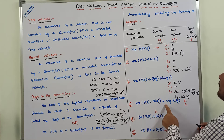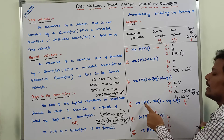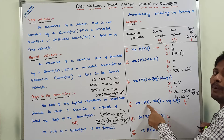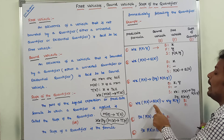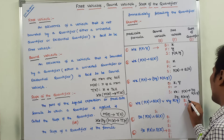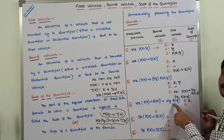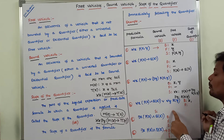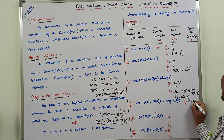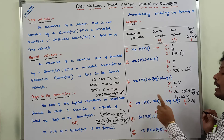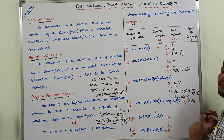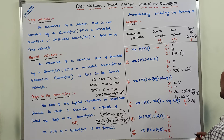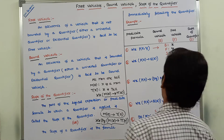Consider the next example: for all x, [P(x) ∧ Q(x)] ∧ for all y, R(y). The predicate P belongs to one subject x, predicate Q belongs to one subject x, and predicate R belongs to one variable y. X is bounded with for all x, and y is bounded with for all y. So both x and y are bounded variables — there is no free variable.